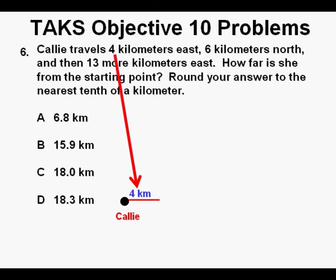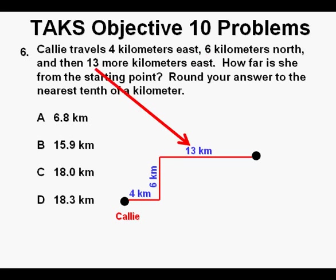From this starting point, we'll go 4 kilometers to the east. And then she goes 6 kilometers to the north. And finally 13 more kilometers to the east to her final destination. Just based on this drawing, we can eliminate these first two answers, A and B, since they are not long enough. The distance has to be greater than 17 kilometers.